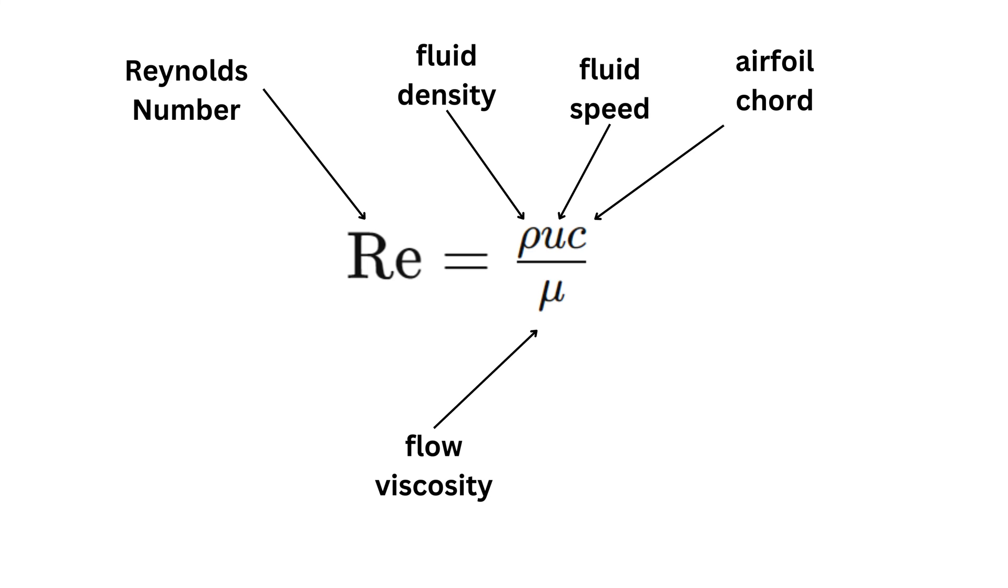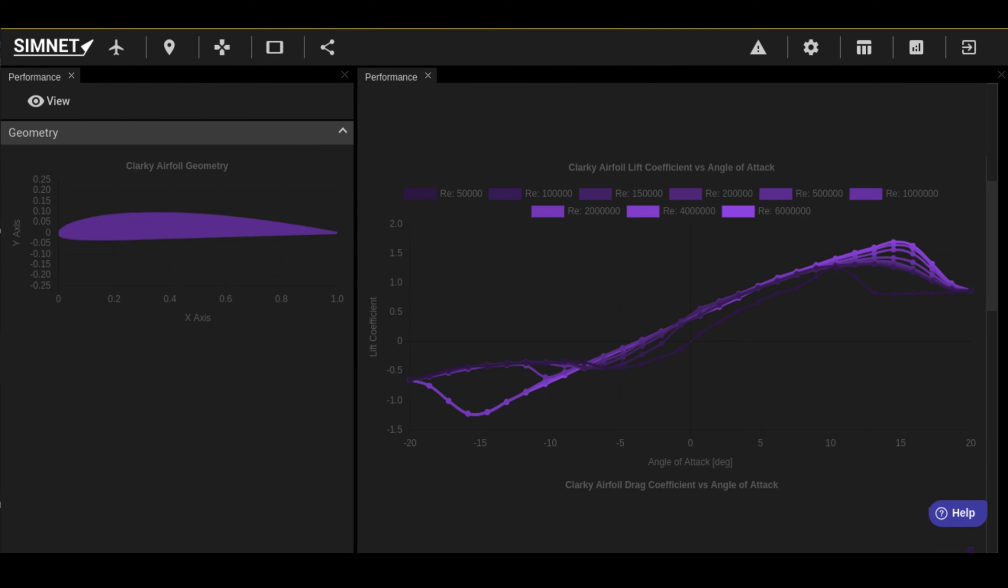We have seen how the lift and drag coefficients are a function of the angle of attack of the airfoil. Now we will see how they are also a function of the Reynolds number of the flow. Let's revisit the lift and drag coefficients of an airfoil, this time considering their dependency on the Reynolds number and angle of attack. In this plot, lines with higher Reynolds numbers are colored with a brighter shade of purple. We can see that higher Reynolds numbers tend to postpone the onset of stall to greater angles of attack and enable higher lift coefficients. Therefore, smaller airfoils are more susceptible to stalls, especially at low flow speeds, because of the lower Reynolds number.